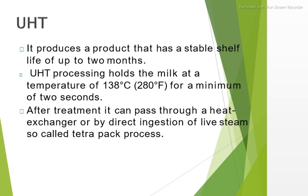UHT — Ultra High Temperature — pasteurization produces a product with a stable shelf life of up to 2 months. UHT processing holds milk at a temperature of 138 degrees Celsius or 280 degrees Fahrenheit for a minimum of 2 seconds. After treatment, it can pass through a heat exchanger or by direct injection into a so-called tetrapack process.